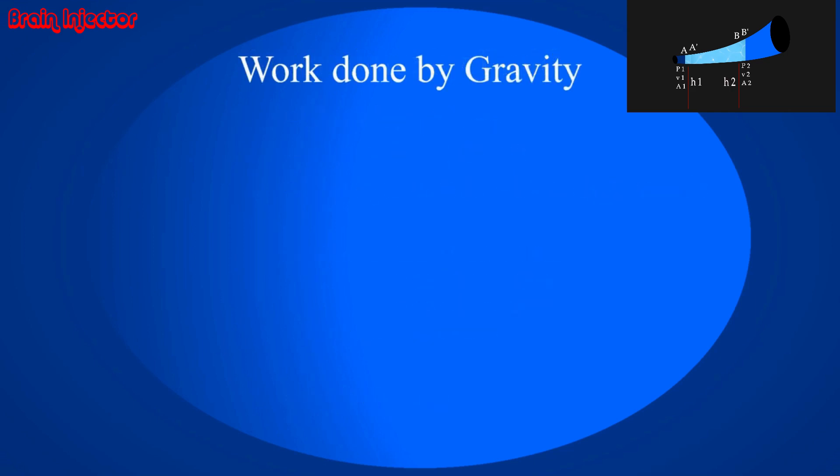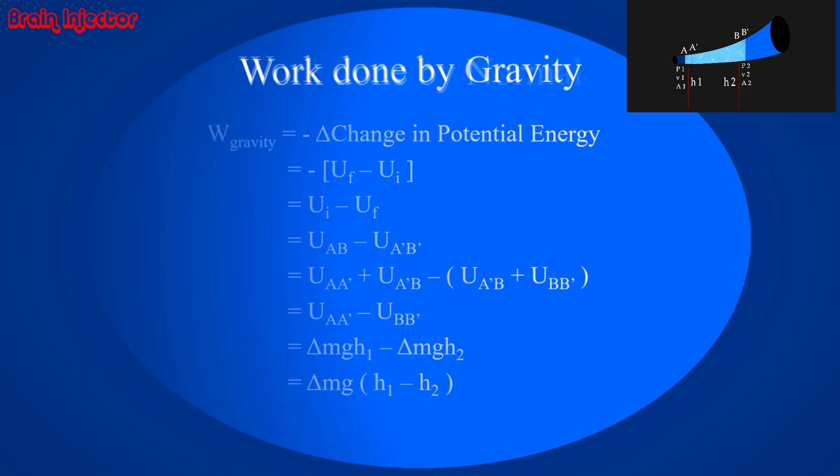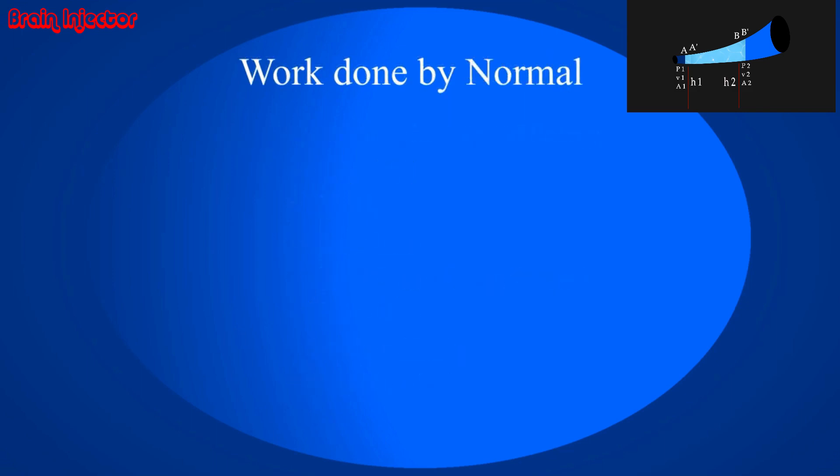Now consider work done by conservative force gravity. It is the total change in the potential energy of the fluid, which eventually gives delta M times G times H1 minus H2. We break the potential energy of part AB into A dash plus A dash B and did the derivation as you could see. The normal force is also acting on the fluid but it is zero because the fluid motion is perpendicular to the normal force.